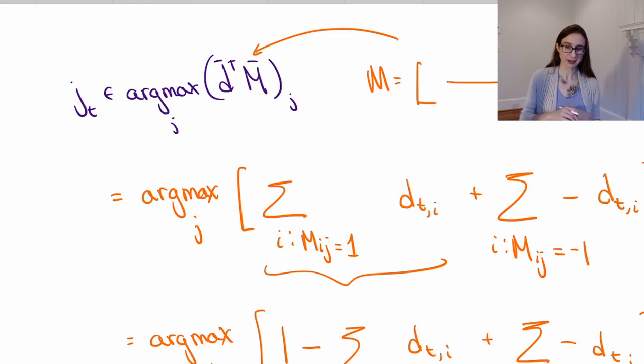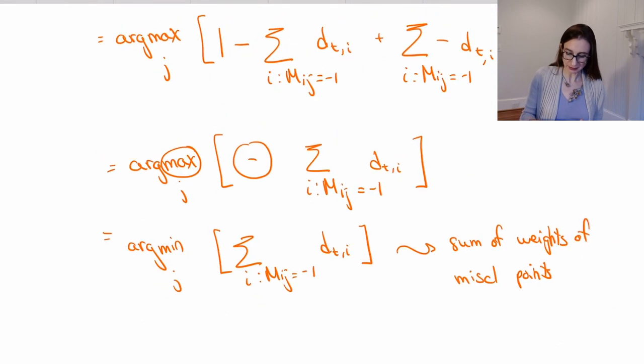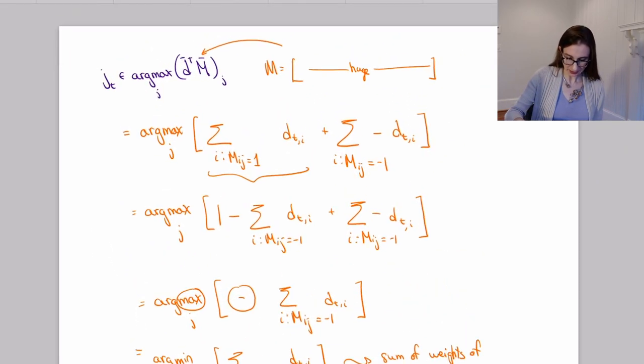And so what we've derived is that this quantity over here, the direction we're traveling in, picking the choice of weak classifier, it's picking the same thing as the weak learning algorithm, which is the weak classifier that minimizes the sum of weights on the misclassified points. So actually, this step is the weak learning algorithm.